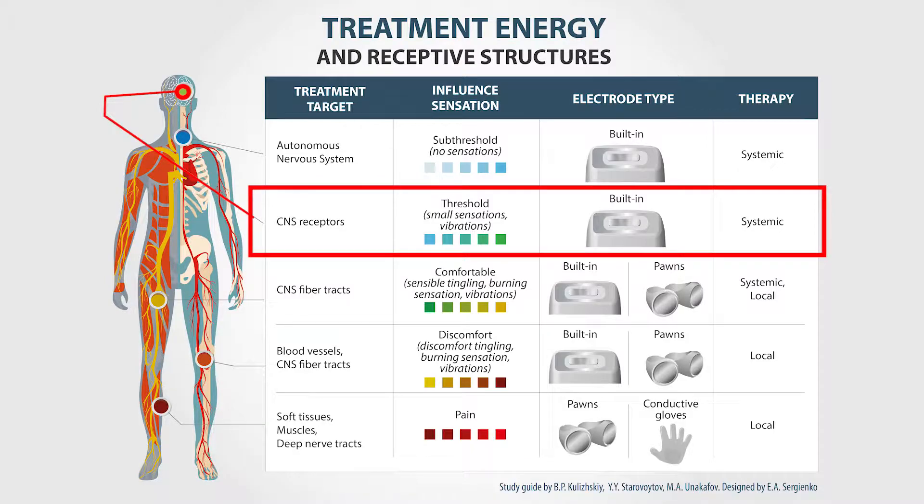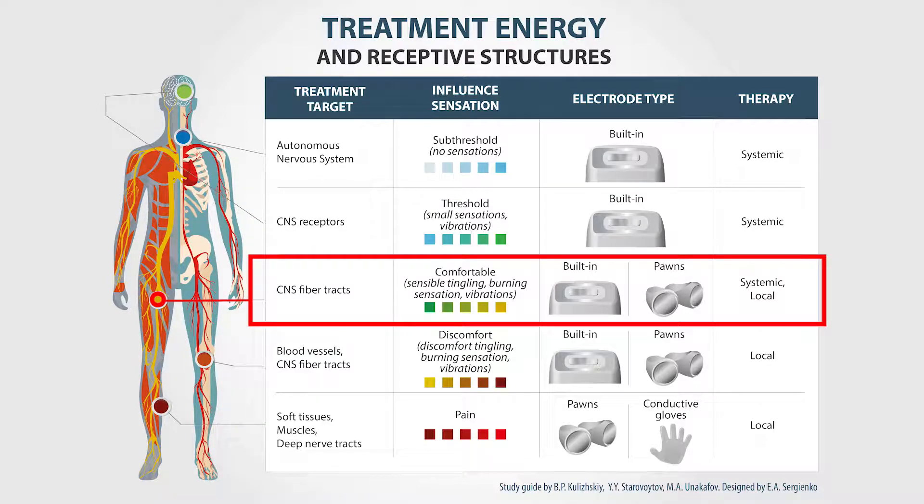The comfortable level influences the pathways of the central nervous system and can be used for conducting-type myostimulation, the treatment of the nerve roots and plexus, as well as for local anti-edemic, anti-inflammatory, and anti-pain therapy. At this level, we can use both built-in and external electrodes.